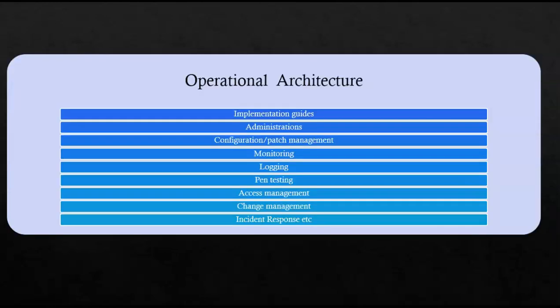Also in component architecture, we need to take care of security products and tools such as antivirus, VPN, firewall, wireless security, and vulnerability scanners. We also need to cover web services security like HTTPS, HTTP APIs, and web application firewalls. Finally, we need to define the operational architecture, which will cover implementation guides, administration guides, configuration, patch management, monitoring, logging, pen testing, access control, change management, and incident handling.